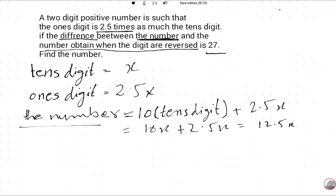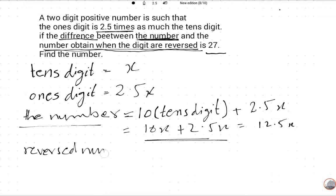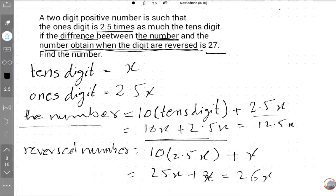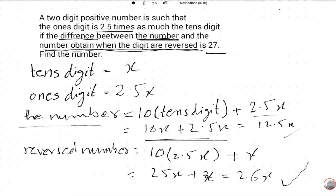Now we will find the reversed number. When we reverse the digits, the tens digit becomes 2.5x and the ones digit becomes x. So the reversed number is 10 times 2.5x plus x, which equals 25x plus x, equal to 26x.